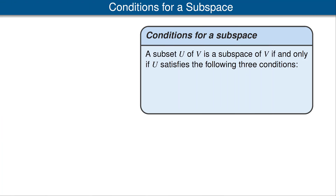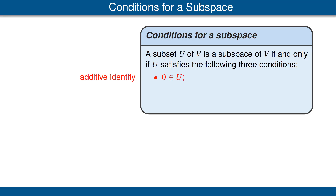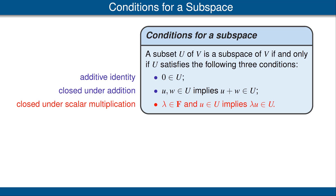Before we give other examples of subspaces, let's look at this theorem which gives an easy condition for checking whether a subset U of V is a subspace of V. A subset U of V is a subspace of V if and only if U satisfies the following three conditions. The first condition is that 0, the additive identity of V, is an element of U. The second condition is that U is closed under addition, meaning if we take any two vectors in U, their sum is also in U. The third condition is that U is closed under scalar multiplication, meaning that if we take any scalar and any element of U, the product is also an element of U.